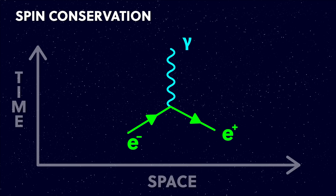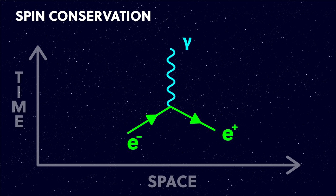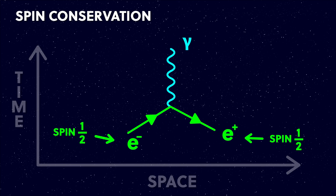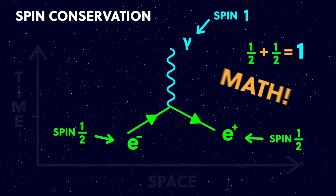There are a bunch of rules about how particles can interact with each other, known as the conservation laws of particle physics. They say that certain quantities, like spin, can't be created or destroyed in a particle interaction. The same amount of spin going into a reaction needs to come out at the other end. One example is an electron and an anti-electron known as a positron, which come together and annihilate into a photon. This is allowed because the particles going in have got a spin of a half each, and they add together to give the photon a spin of one. So spin is conserved.